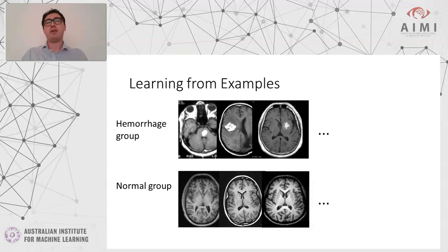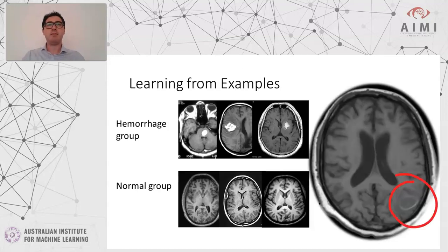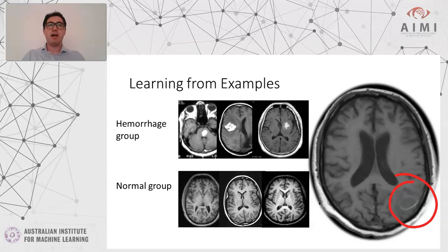We know that most of the time a hemorrhage may appear as bright lesions on T1 because they are subacute. But if we have an acute hemorrhage, it may not be that bright — it's usually gray, like iso-intense to the gray matter. So if we give this image to the model that was trained on only bright lesions, it may get it wrong and classify it as normal. The reason for that problem is that we didn't have a representative data set that had all the imaging appearances of this specific disease.